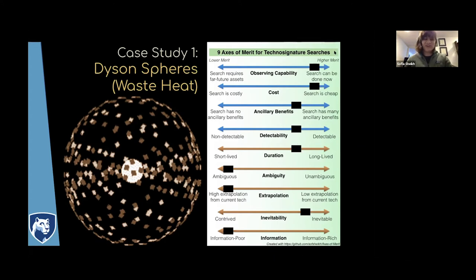Detectability is a squishier axis because it's linked to things like observing capability. But in general, we're looking for a big effect here. As far as actual length scales go, we're looking for something the size of an entire stellar system, so that puts this more towards the detectable side. It's a large impact on its environment. Another benefit of waste heat searches is that Dyson spheres are longer lived than perhaps electromagnetic beacons because you don't have to continually input energy into them. They could outlive their host ETI or their constructors.